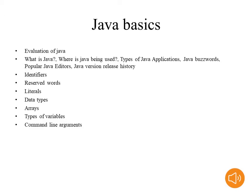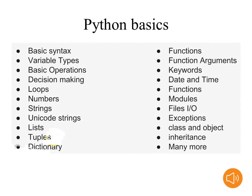These are the basics common to C, C++, Java, Python, and any programming language we consider. Now moving to Python basics: compared to Java basics, Python has some extra concepts. As usual we learn syntax, variable types, basic operations, decision making, and loops, but in Python we also learn extra concepts such as lists, tuples, methods, date and time, exceptions, classes and objects, and inheritance.